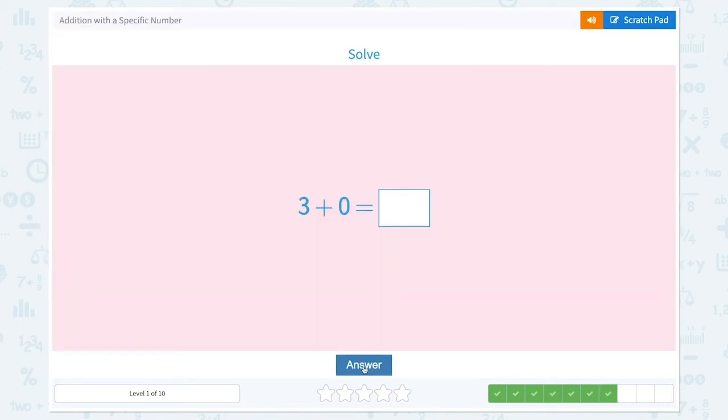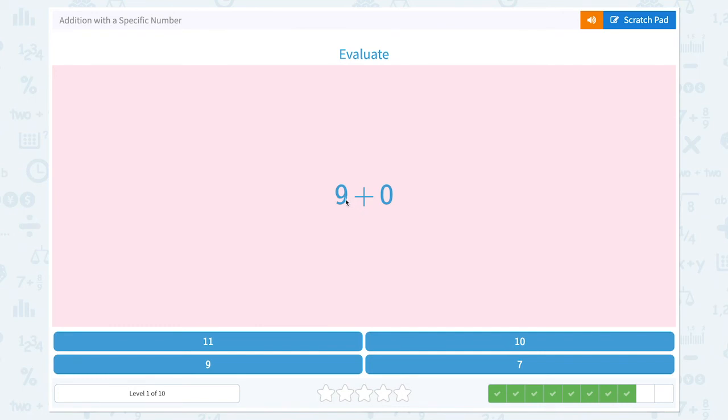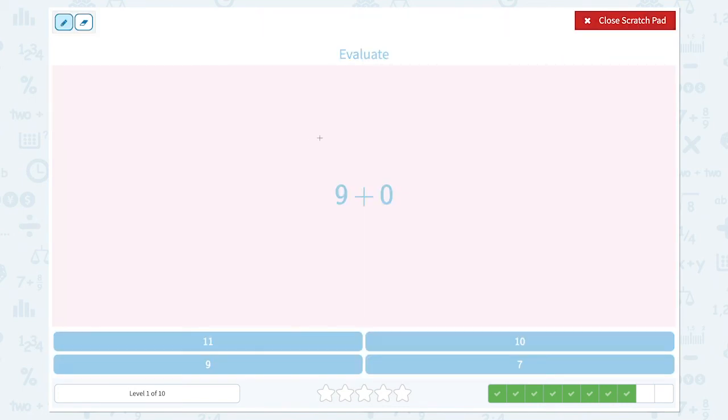That's right. Solve 3 plus 0 equals 3, because 0 is the same as none. Nice work. Evaluate 9 plus 0 equals. Let's check with the number line. We start with 9 and count on, but we don't have anything to count on because 0 is the same as none, so the answer is 9.